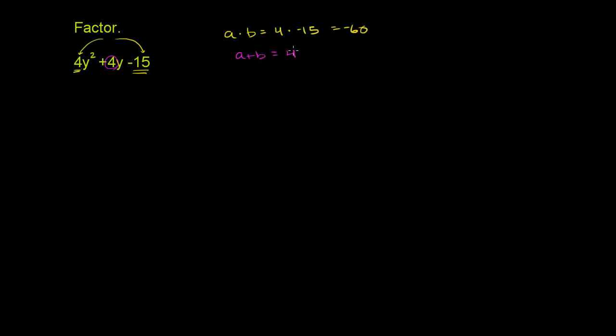And if we can figure out an a and b to satisfy this, then we can break up this 4y into an ay plus a by, and then we can factor by grouping. Now the first clue here is that the product of the numbers is negative, so that means that a and b must have different signs.